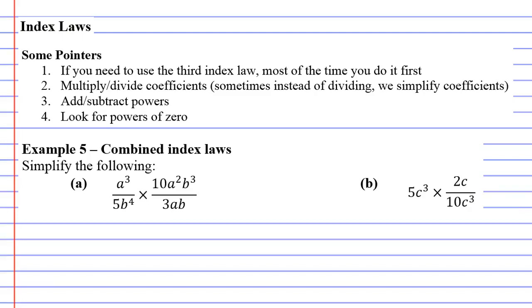Index laws, example 5, which involves combined index laws. That means we could be using any one of the four index laws, or even maybe all of them, within one question.